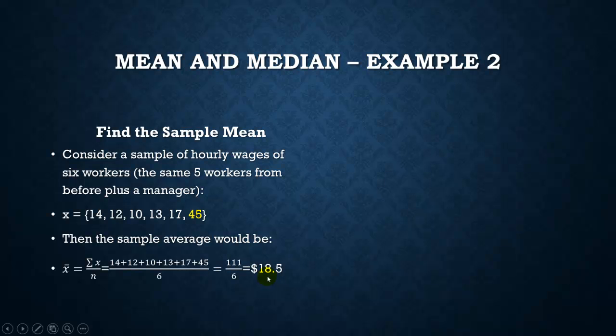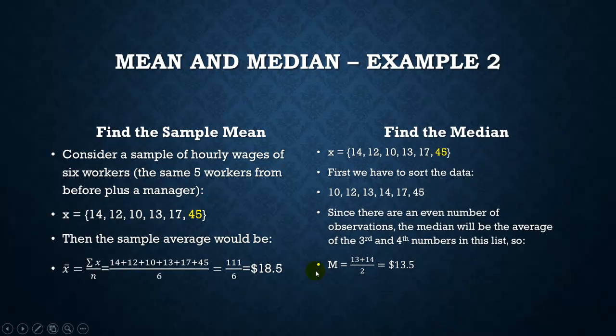Just pausing for a moment to look at this, $18.50, that seems kind of high if you think about it. In fact, all of our workers, well, 5 out of our 6 workers are actually making less than $18.50, and only one of them is making above, and the one that's making above isn't making anywhere near $18.50. So while this $18.50 may be the mean, it doesn't seem very descriptive of our sample at all.